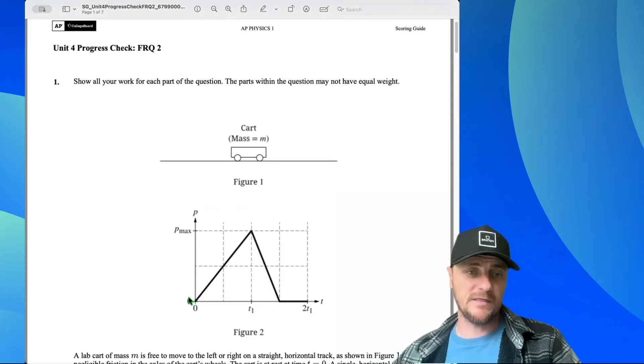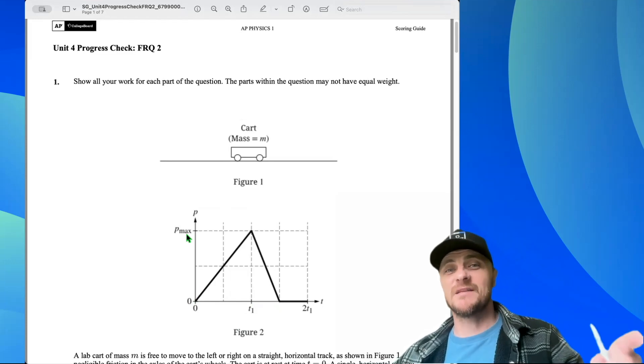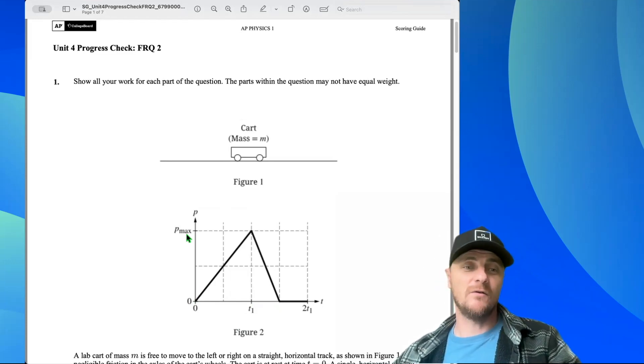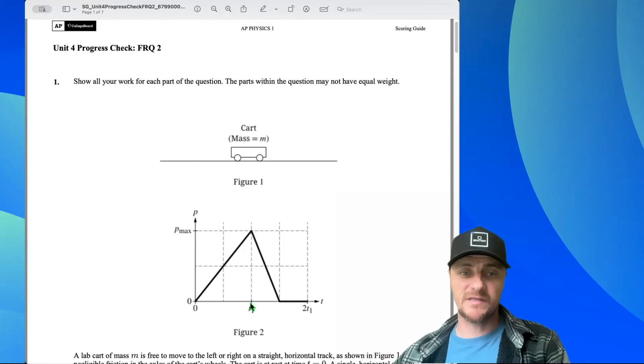The reason I know that is because my momentum is increasing. Momentum is equal to mass times velocity. So my velocity must also be increasing. And what is a change in velocity? It's acceleration. So I must have a positive acceleration.